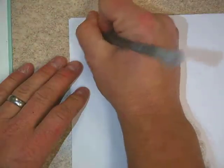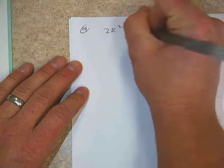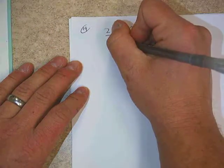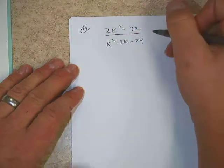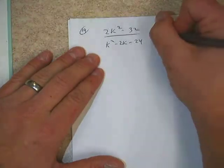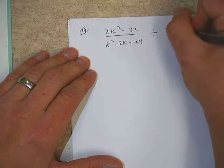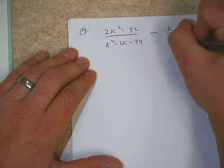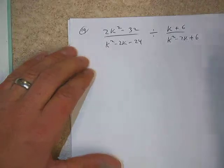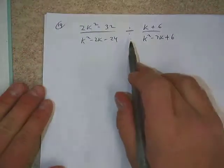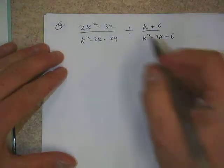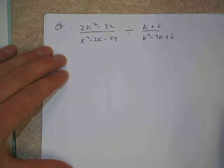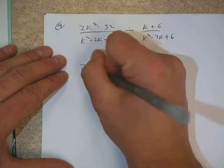Let's take a look at one more example here from your book, and that would be number 19. We'll go back to your book, number 19. We're on page 438. And we have 2k squared minus 32 and we have 2k squared minus 2k minus 24. And we're doing divided by. And we have k plus 6 on top and we have k squared minus 7k plus 6 on the bottom. Now notice that we've switched gears here. Now we're doing a division problem.